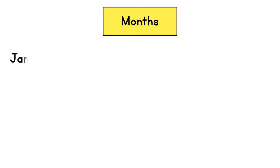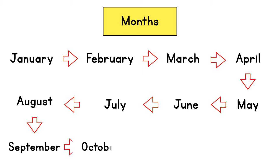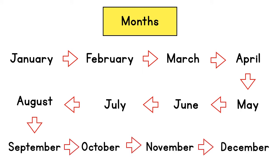So for months, we have 12 months in a year: January, February, March, April, May, June, July, August, September, October, November, and finally December. Kita ada 12 bulan dalam setahun.